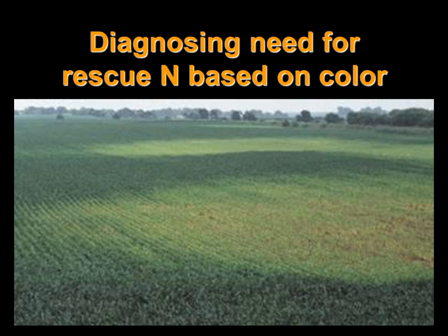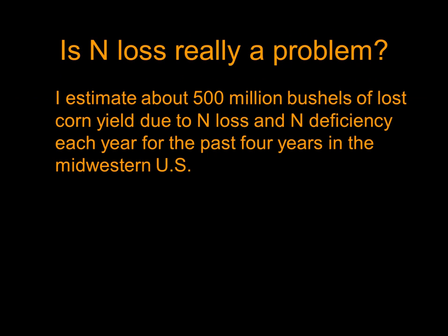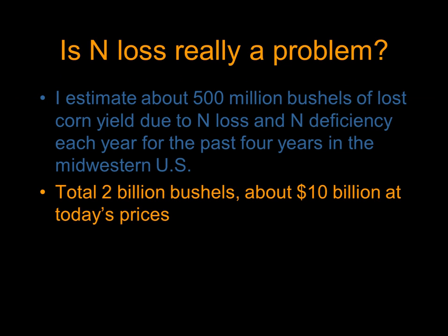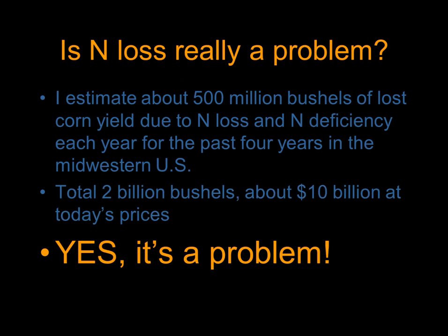Here's a picture of a field with some problems. I'm estimating we've had about 500 million bushels of lost corn yield due to nitrogen loss and deficiency each year for the past four years in the Midwestern U.S. That's 500 million bushels four years in a row — 2 billion bushels total, about 10 billion dollars at today's prices. The money is out there to do something better than what we've been doing, and remote sensing can be a part of that.